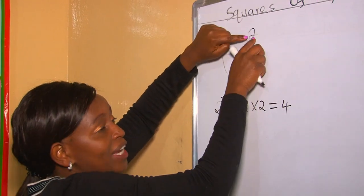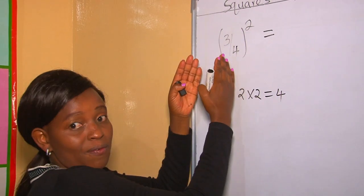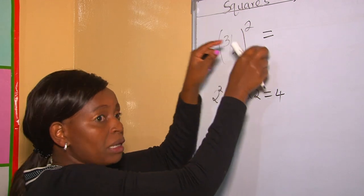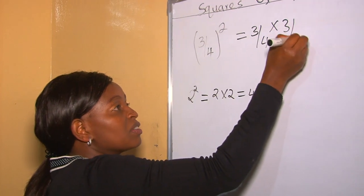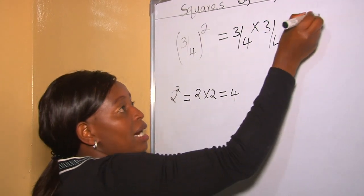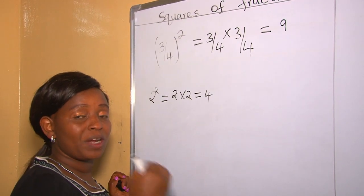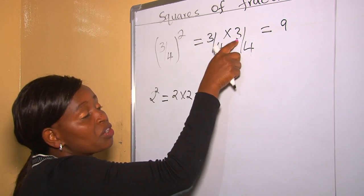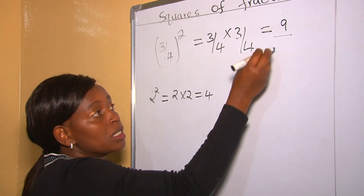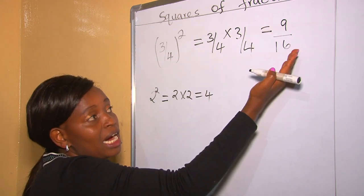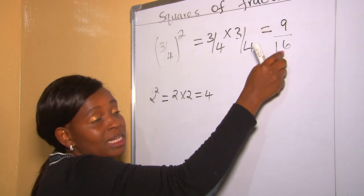Now let's go back to our example. Three quarters squared — you can write this as a fraction: three quarters multiplied by three quarters. That is three times three, which is nine. From our previous lesson we learned about multiplication of fraction by fraction. Three multiplied by three is nine, and our denominators four multiplied by four is 16. As you can see, our answer is 9 over 16.